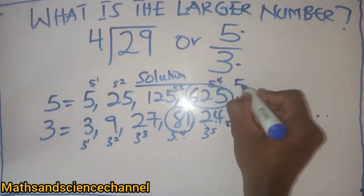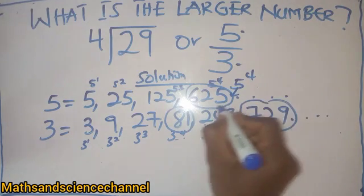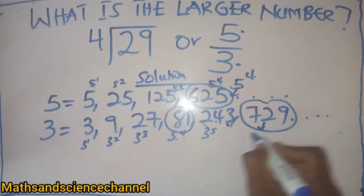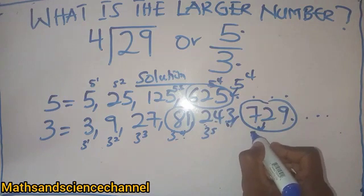So I'm going to pick 5 raised to the power 4, that is for the 625, and also for 729 is 3 raised to the power 6.